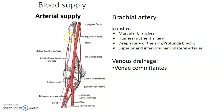Laterally, the profunda brachial artery gives two branches: an anterior branch passing anterior to the lateral epicondyle, and a posterior branch passing posterior to the lateral epicondyle. The anterior branch — the radial collateral — anastomoses with the radial recurrent anterior to the lateral epicondyle. The posterior branch of profunda brachial anastomoses with the interosseous recurrent, which comes from the posterior interosseous branch of the common interosseous of the ulnar artery.